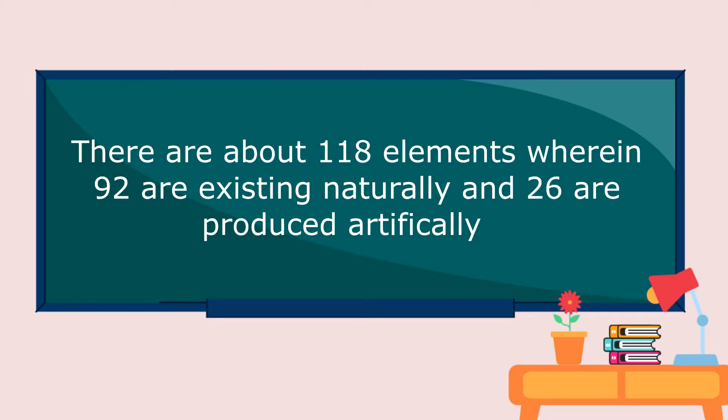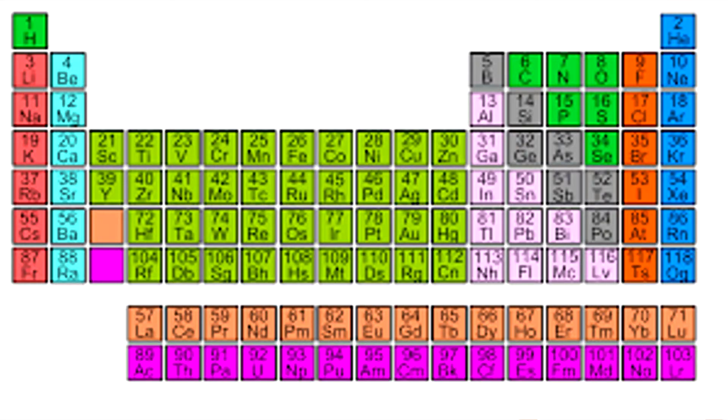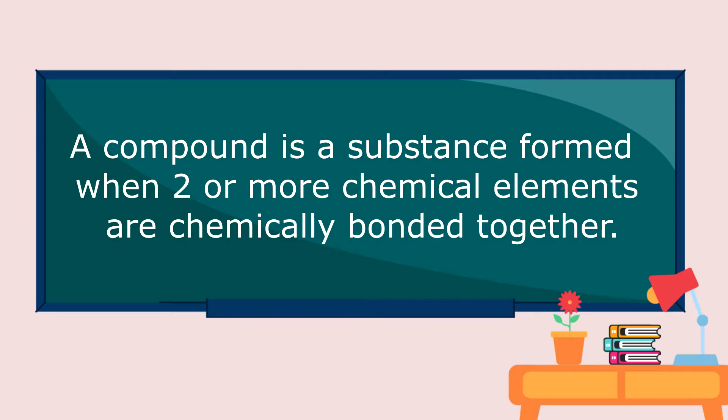There are about 118 elements wherein 92 are existing naturally and 26 are produced artificially. A compound is a substance formed when two or more chemical elements are chemically bonded together.